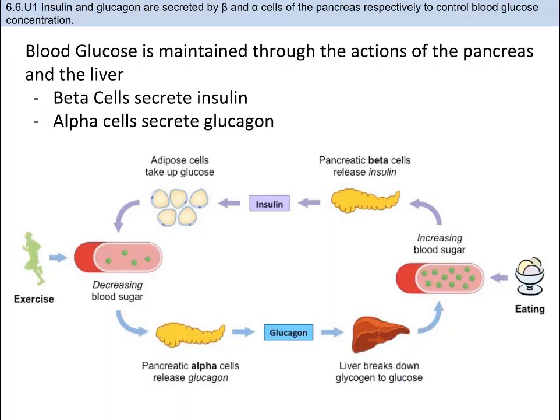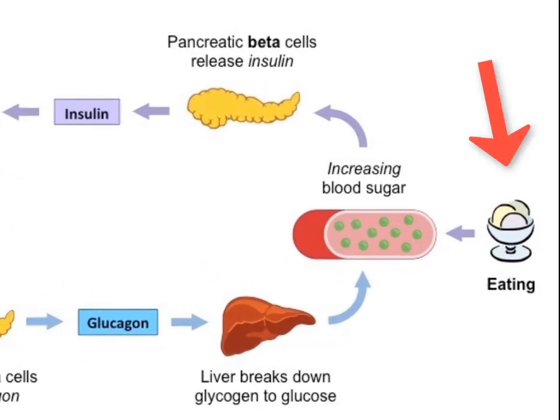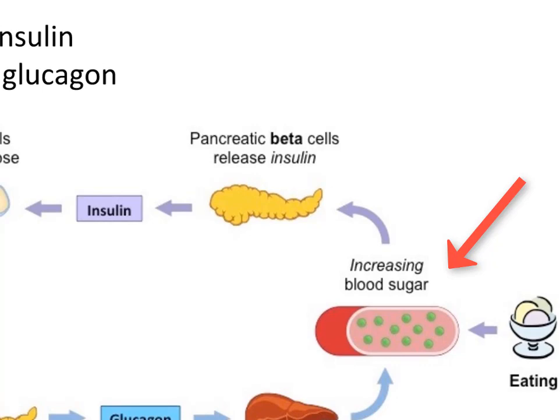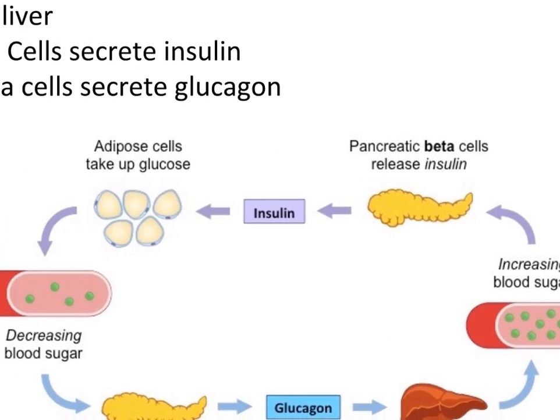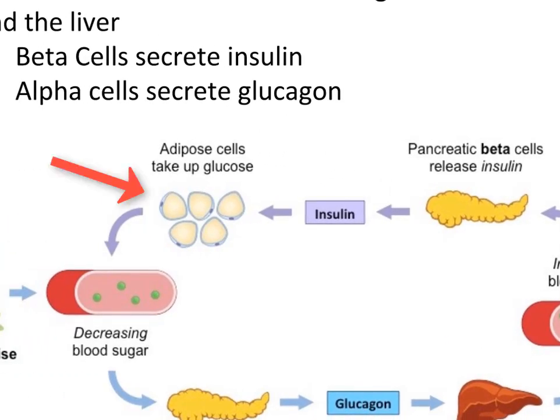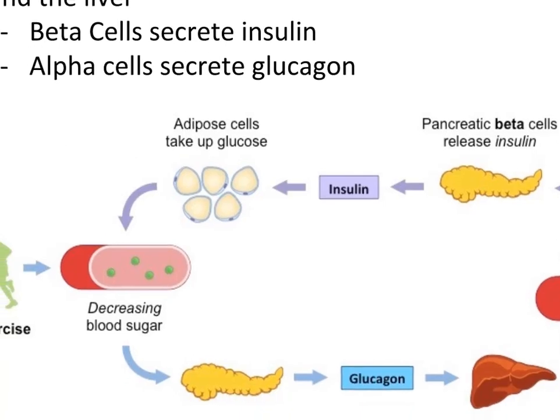Our pancreas is the sugar monitoring center of the body, and this organ uses insulin and glucagon to monitor and balance the amount of glucose in our body. Insulin and glucagon work in a negative feedback loop. The food we digest is broken down into glucose and gets absorbed into our bloodstream in the villi. This increase in blood glucose signals the beta cells in your pancreas to produce insulin. The insulin tells cells throughout your body — like muscle cells — to take in glucose from your bloodstream.